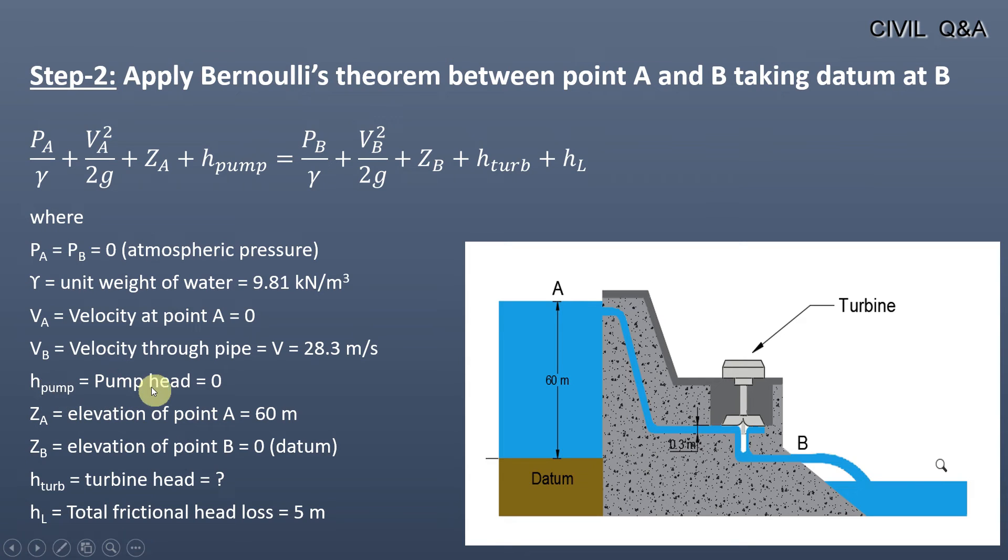Pump head will be equal to zero as there is no pump in the system. The water is flowing from higher elevation to lower elevation, so there is no need of a pump. Elevation of point A is equal to 60 meters and elevation of point B is equal to zero as we are taking the datum at point B.